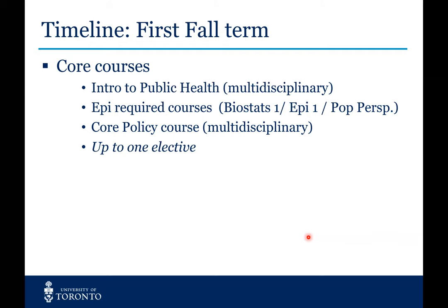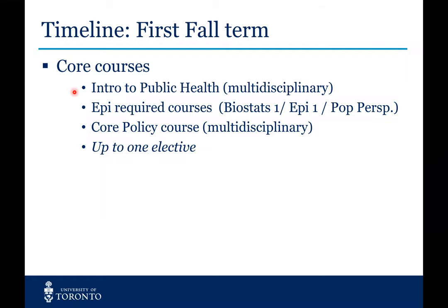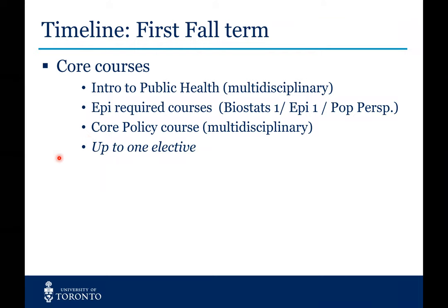The timeline looks like this. These are your required courses in your first fall term. Everybody in all the programs at Dalla Lana takes an intro to public health course, which gives you an idea of the breadth of work done at Dalla Lana and all the different ways we are impacting health in Canada and internationally. You then have your required courses: biostatistics one, epi methods one, population perspectives, and a core policy course. These are your required courses, and you can choose to also take an elective.